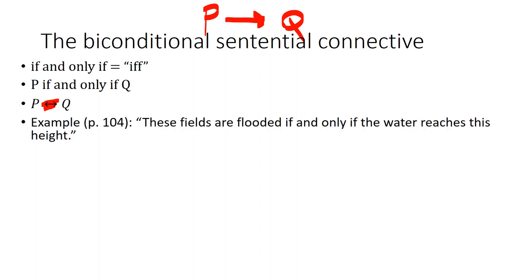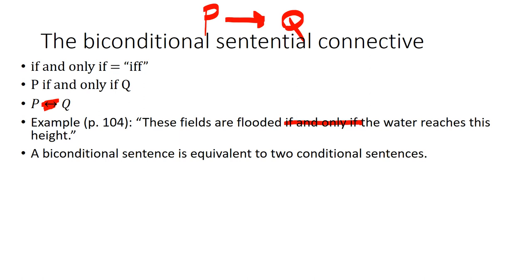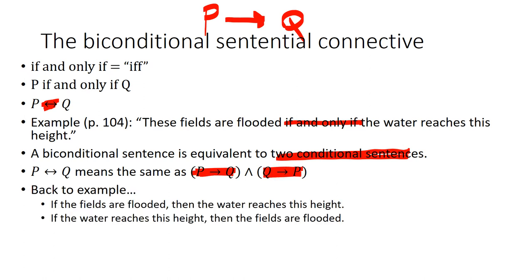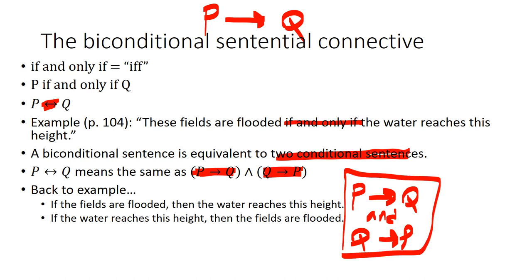For example, on page 104: 'these fields are flooded if and only if the water reaches this height.' A biconditional sentence is equivalent to two conditional sentences. So if we have P if and only if Q, this means the same thing as: if P then Q, and if Q then P. Going back to our example, we get two conditionals: if the fields are flooded then the water reaches this height, and if the water reaches this height then the fields are flooded. So 'if P then Q, and if Q then P' is logically equivalent to 'P if and only if Q.'